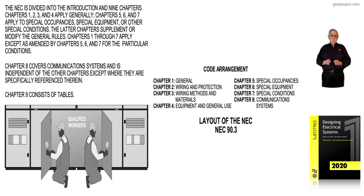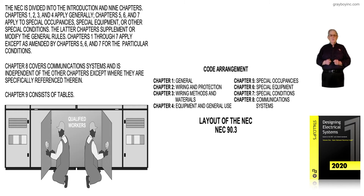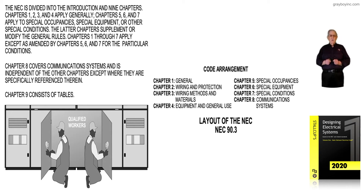Chapter 3 is wiring methods and materials, and chapter 3 basically belongs to the electrician. In other words, after the plans of the facility have been outlined in chapter 2, the electrician uses chapter 3, wiring methods and materials, to install the electrical system.